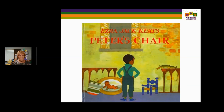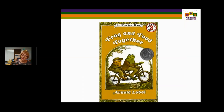Peter's Chair by Ezra Jack Keats is also a complete episode. When Peter sees his blue furniture being painted pink, he feels frustration. But that ultimately leads to him coming to grips with his feeling as he thinks about the new addition to his family, and that leads to a plan. Frog and Toad Together are referenced in Appendix B of the Common Core and are often used as mentor texts for complete episodes. There are two perspectives, and when talking about text complexity, it's important that a child be able to tell two perspectives if there are two characters.